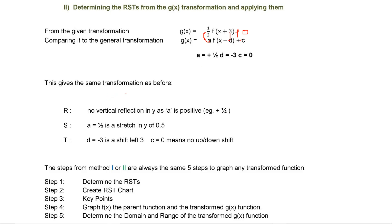That is R, there is no vertical reflection in y since a is positive. S is a equals ½, so it is stretching by 0.5. And then we have d is -3 which is shifting left, and c is 0, that means no up down shift.